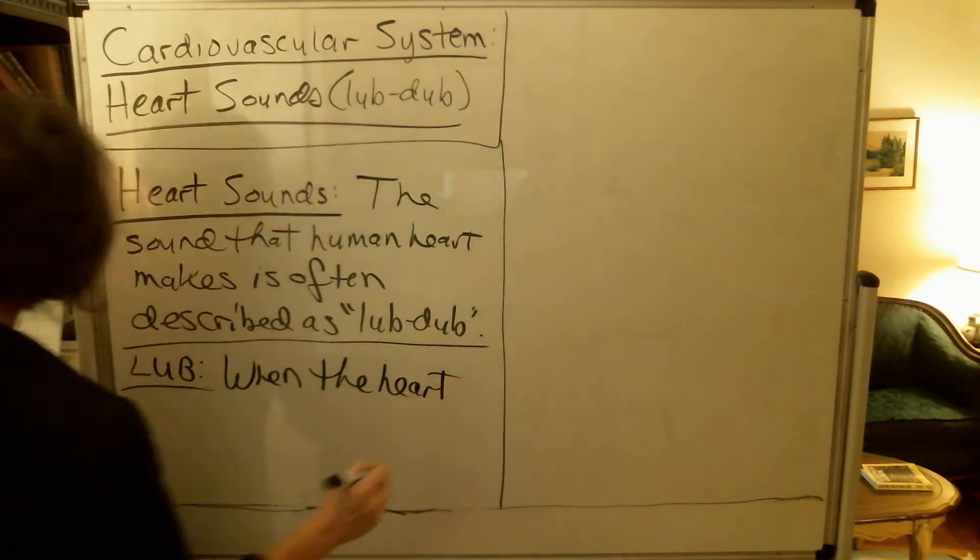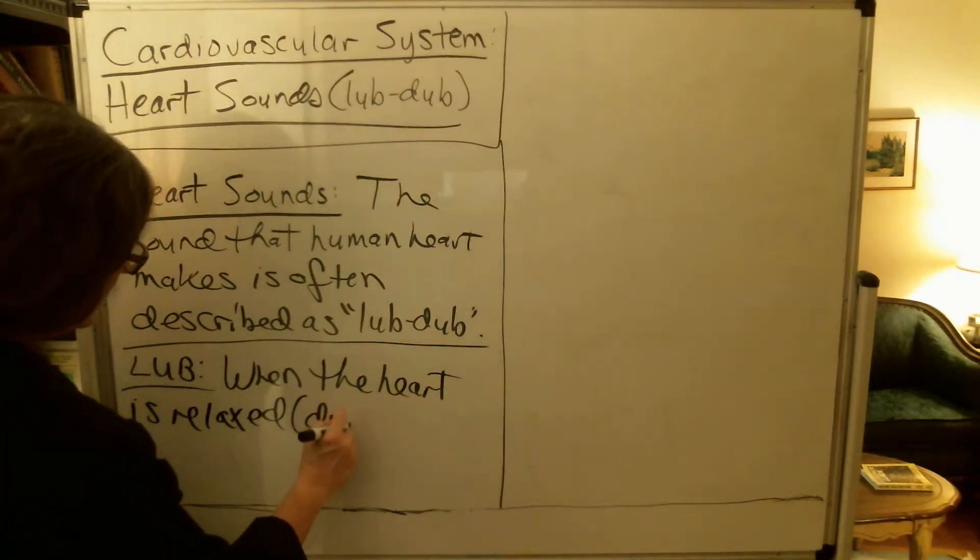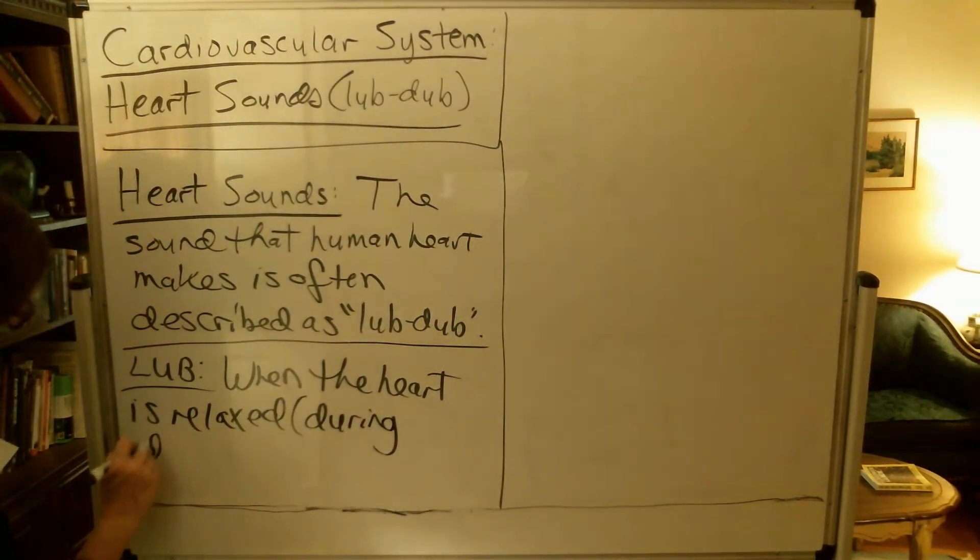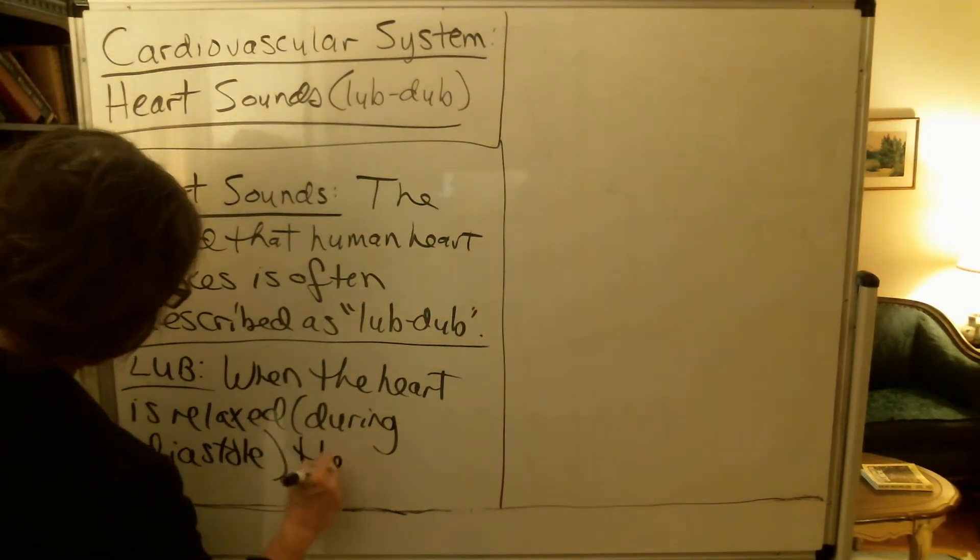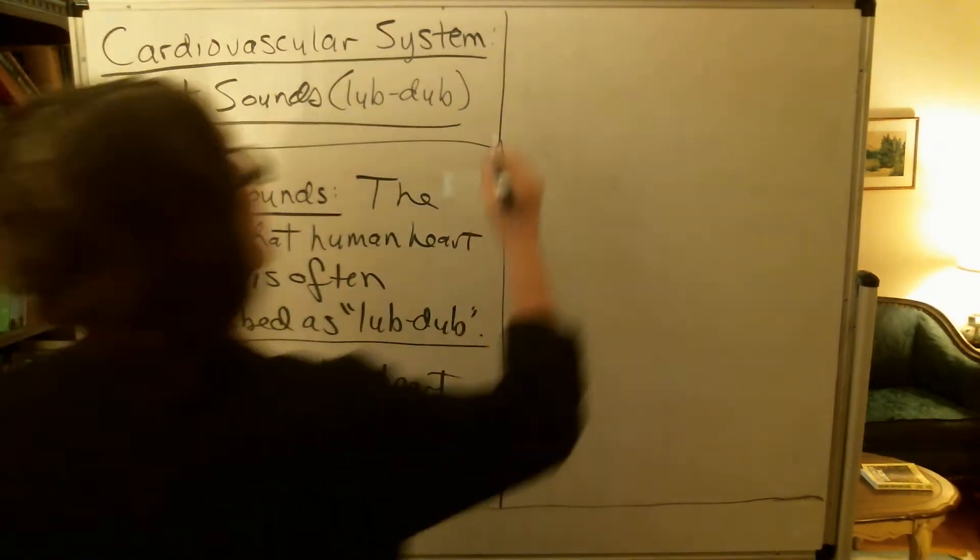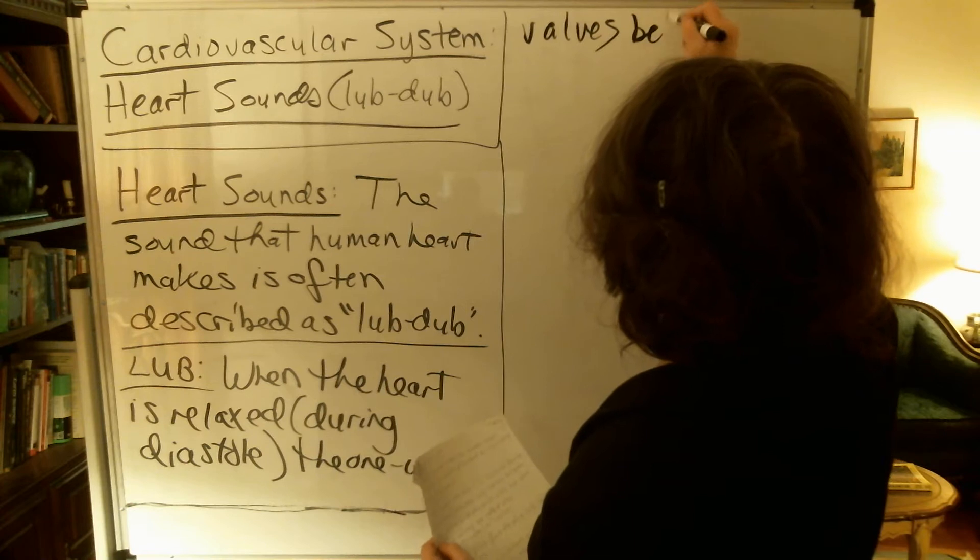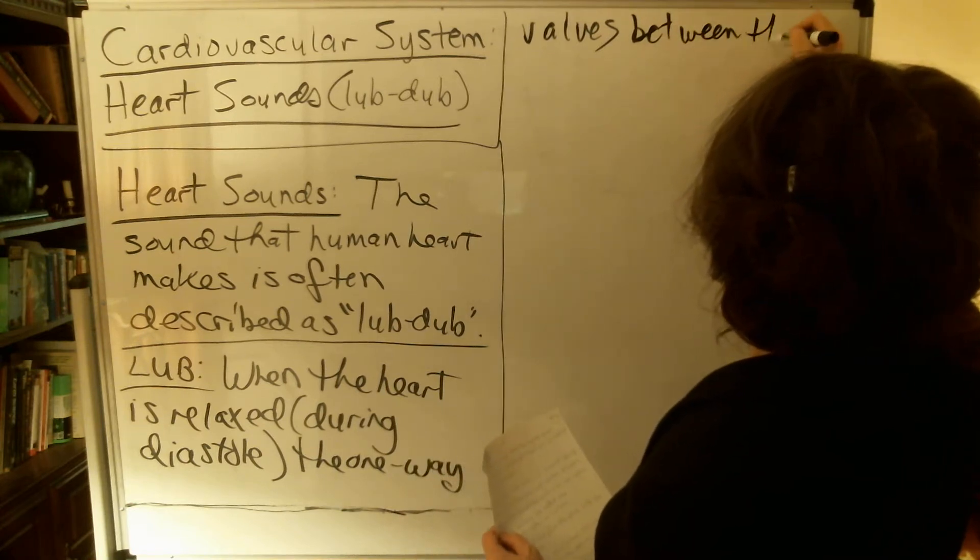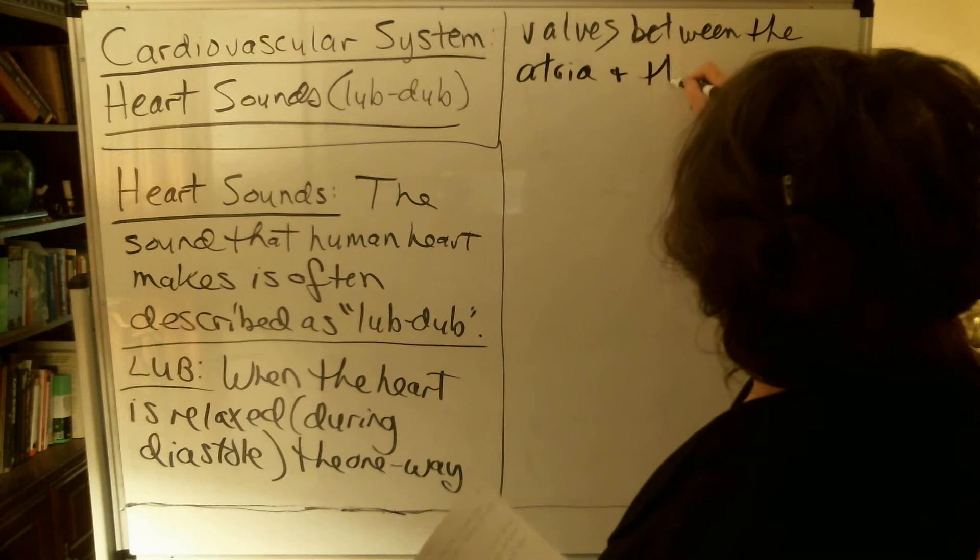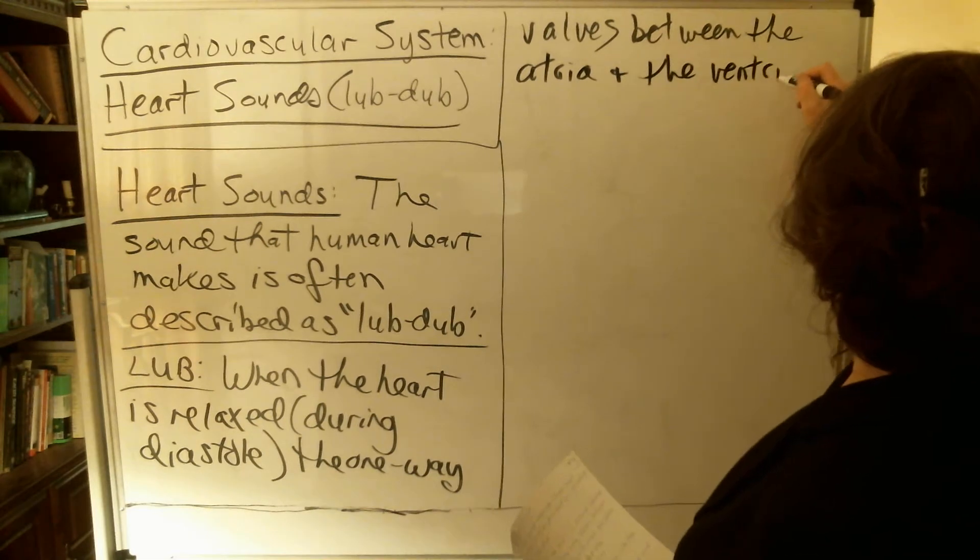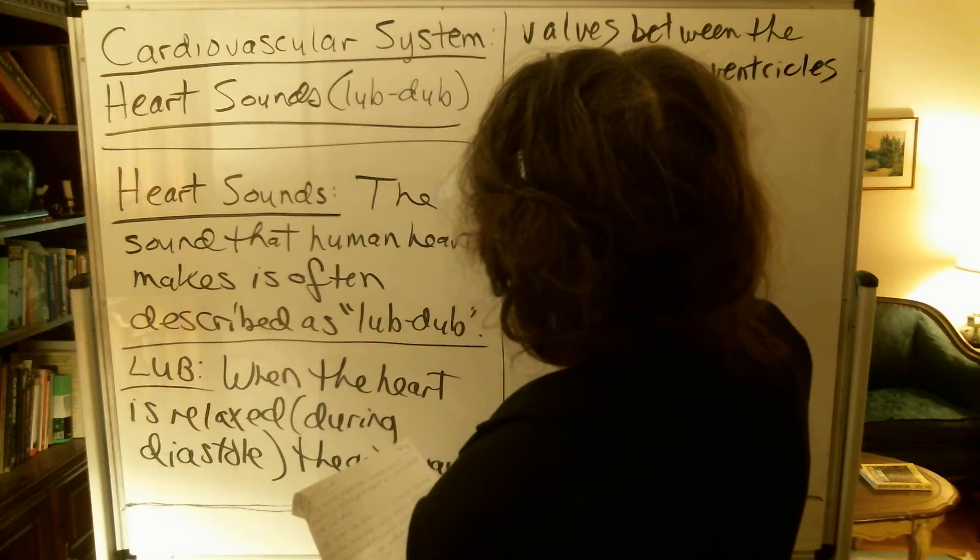When the heart is relaxed, which is during the period known as diastole, the one-way valves between the atria and the ventricles are open.